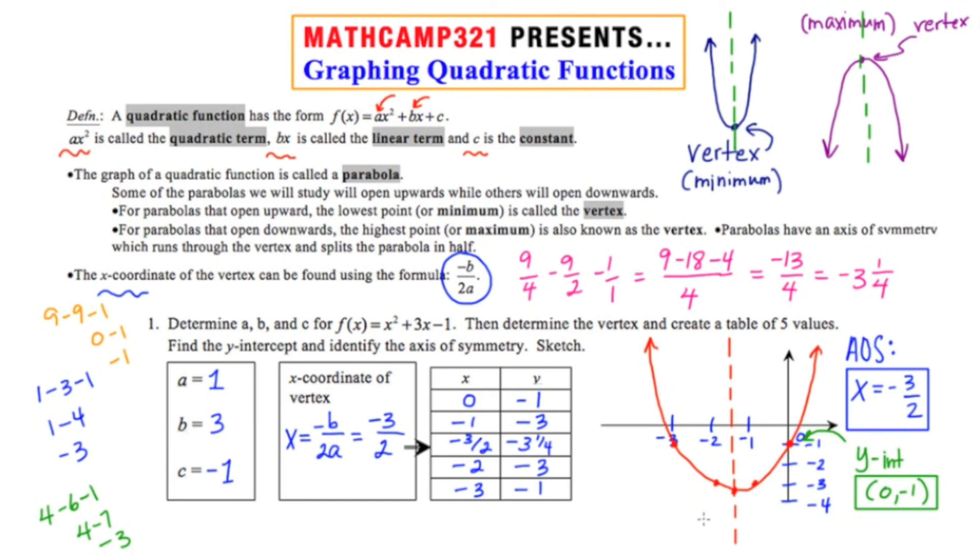And I think I'm going to label the vertex because that's probably the most important point on any parabola. So the vertex is negative 3 halves, and then negative 3 and a quarter. Okay so on this slide we discussed what a quadratic function looks like, how to find the vertex, and how to sketch a graph using this five point approach.